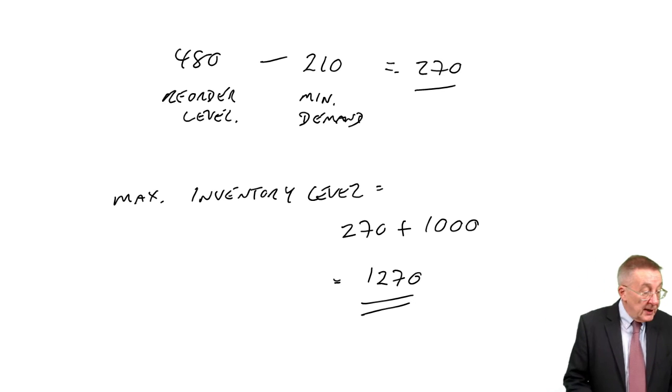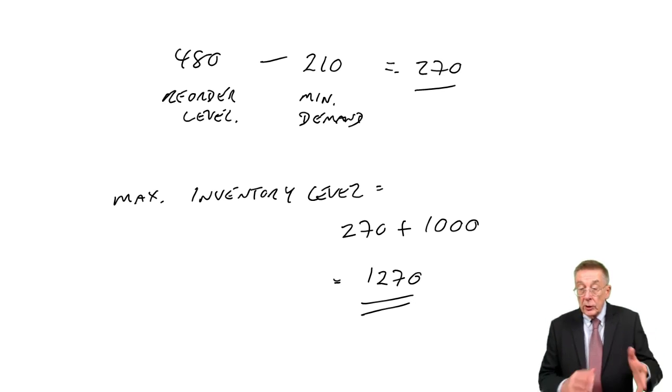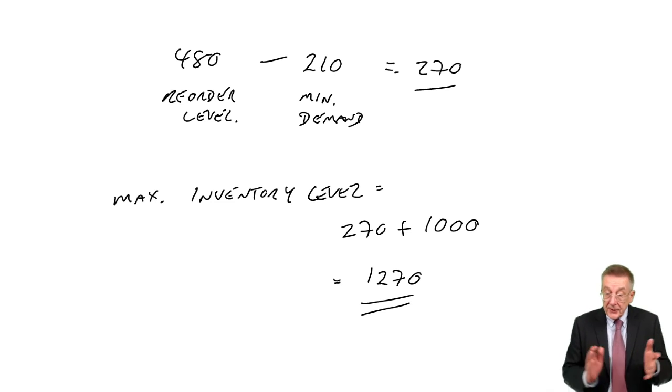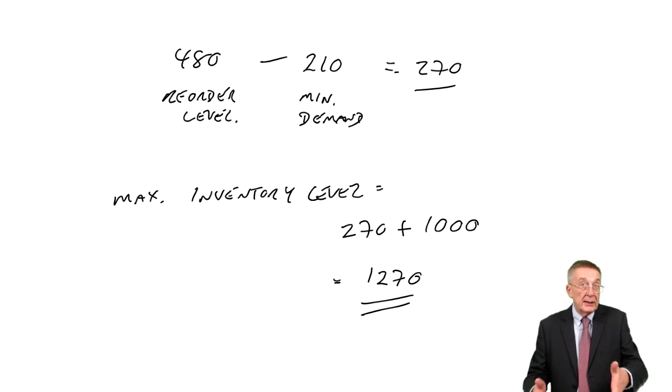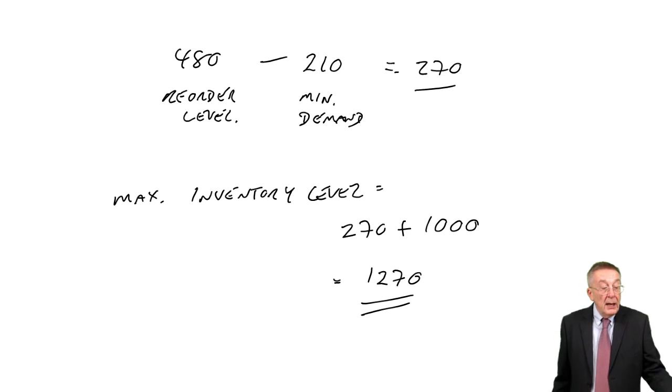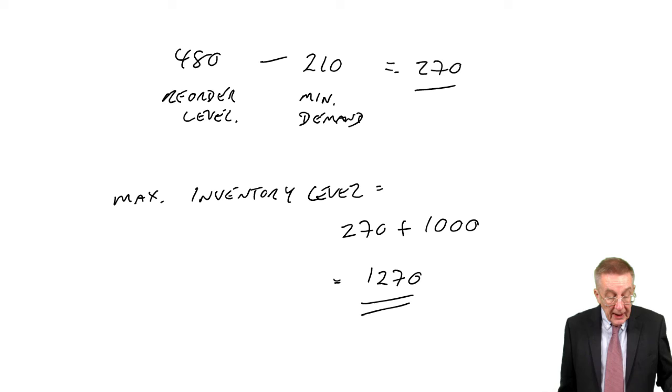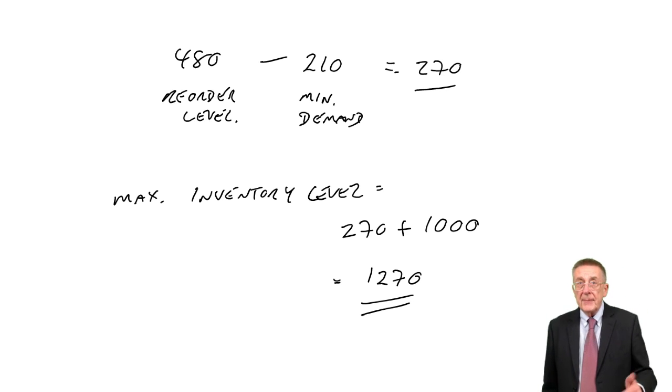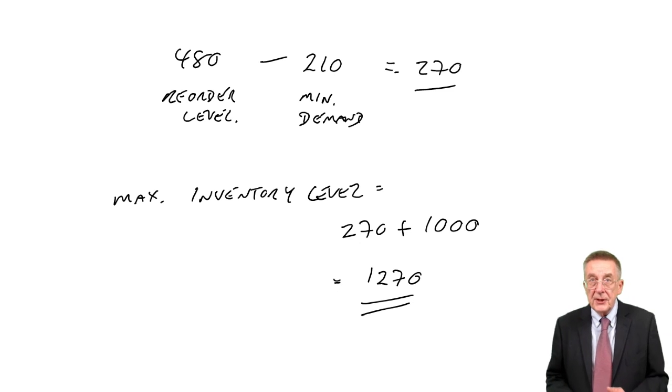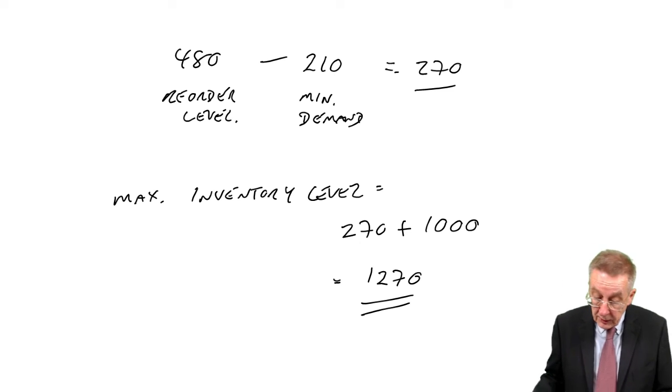So we've done a lot in that chapter. Economic order quantity, dealing with discounts, economic batch quantity, reorder level and safety inventory. Have a look back, work back through the examples, check you are happy. And then as always, have a go at the online test, where there are five or six multiple choice questions.